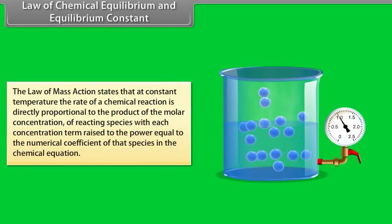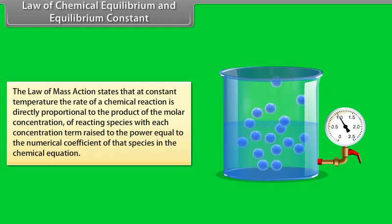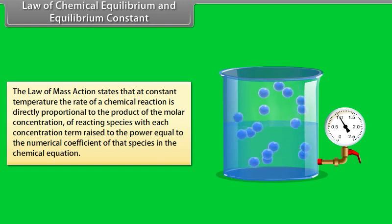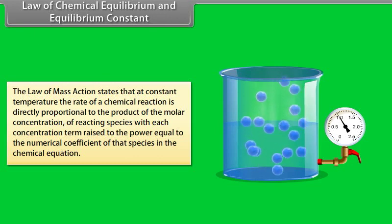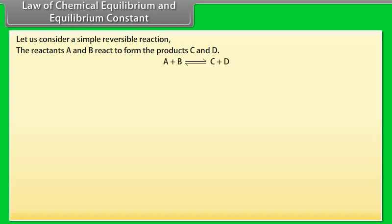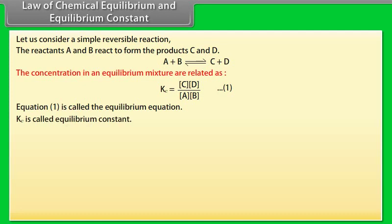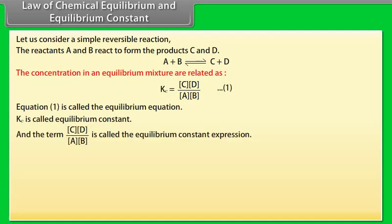Law of Chemical Equilibrium and Equilibrium Constant: The law of mass action states that at constant temperature, the rate of a chemical reaction is directly proportional to the product of the molar concentration of reacting species, with each concentration term raised to the power equal to the numerical coefficient of that species in the chemical equation. For a simple reversible reaction where reactants A and B form products C and D, the concentration in an equilibrium mixture are related by the equilibrium equation. Kc is called the equilibrium constant, and the expression is called the equilibrium constant expression.